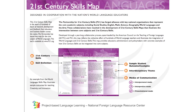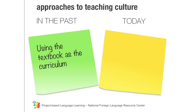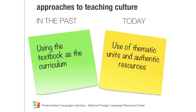The 21st Century Skills Map for world languages, created through collaboration between ACTFL and the Partnership for 21st Century Skills, provides some tools for accessing cultural perspectives. Practices informed by the 21st Century Skills Map show us how approaches to learning culture in the language classroom have changed. In the past, the textbook was the primary source of the curriculum. Today, we use thematic units and authentic resources, which makes it much easier to access culture as it is really experienced by the target people who use the target language.